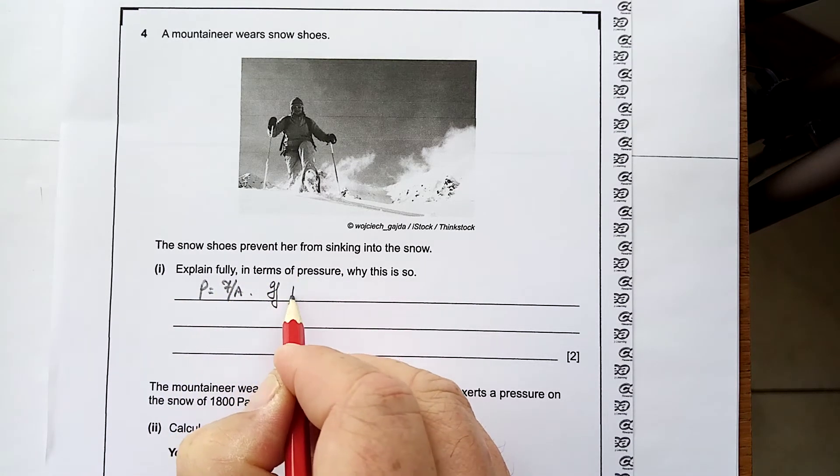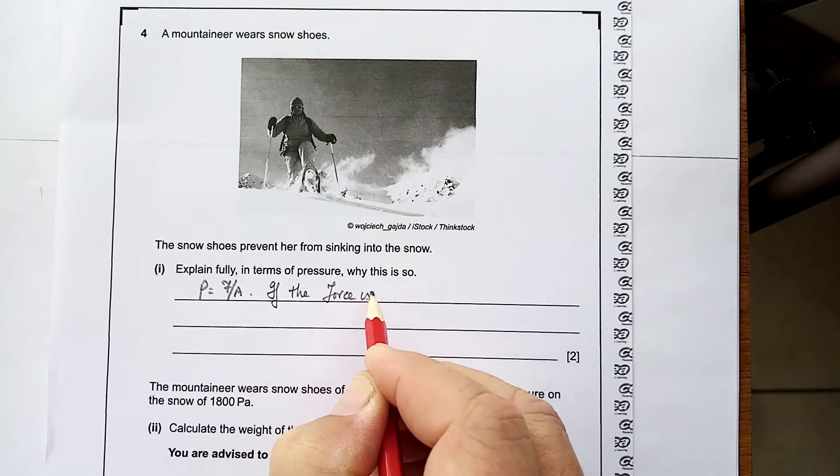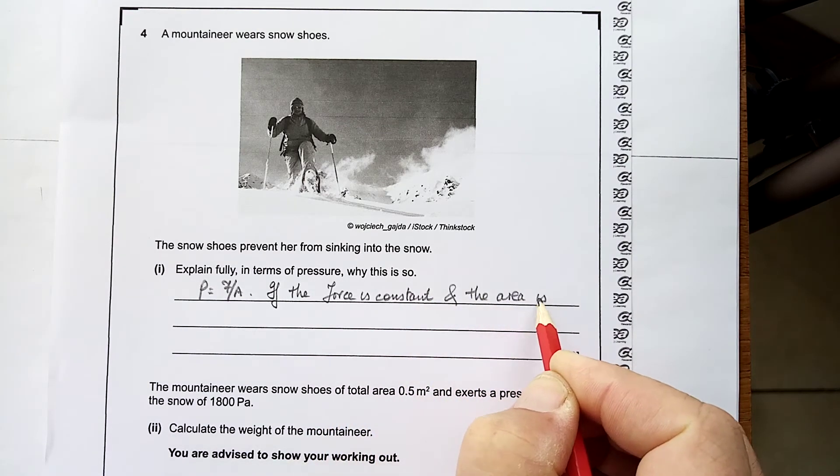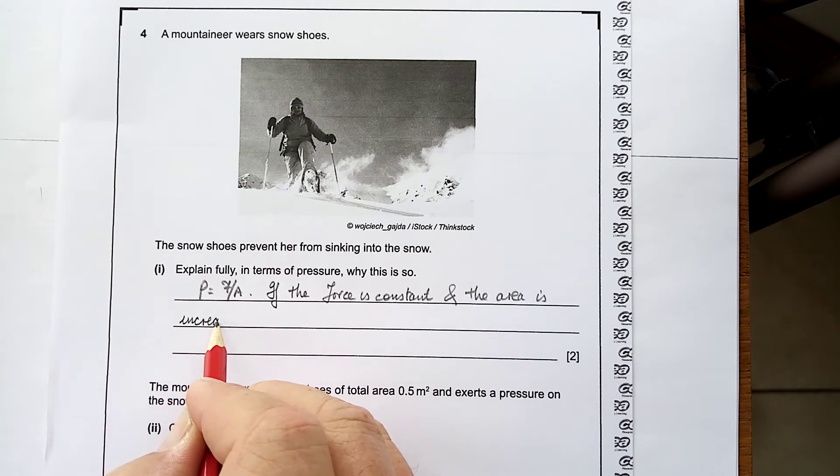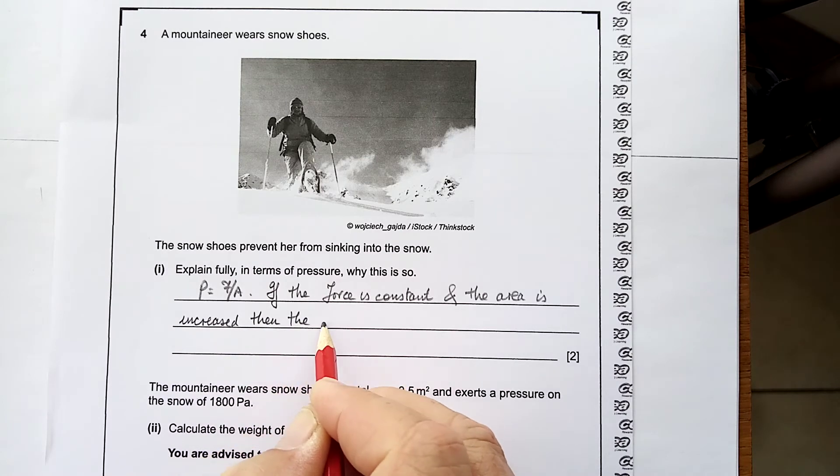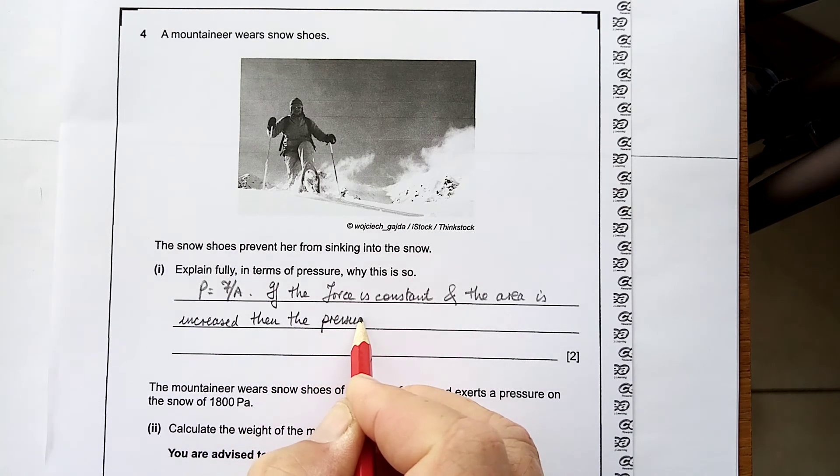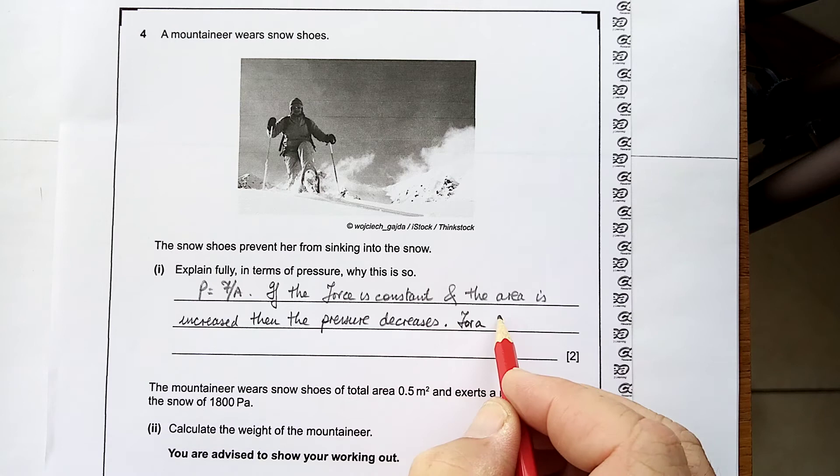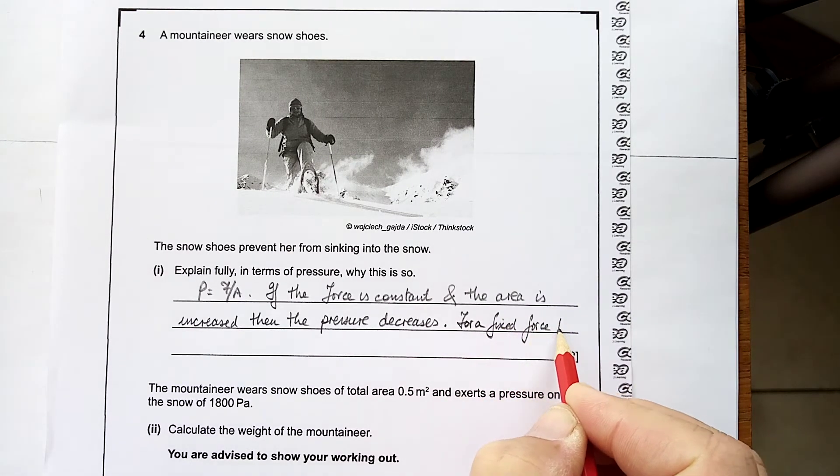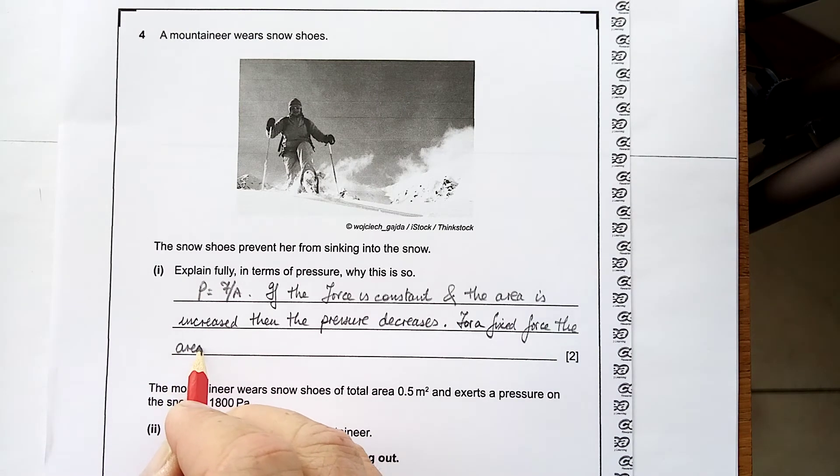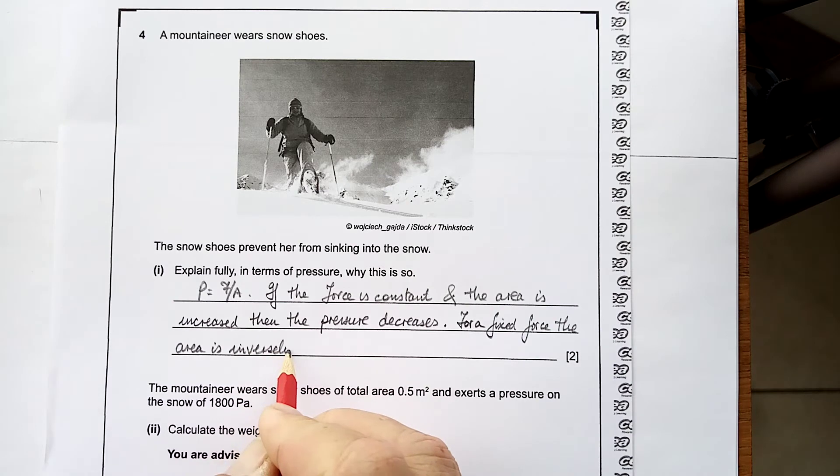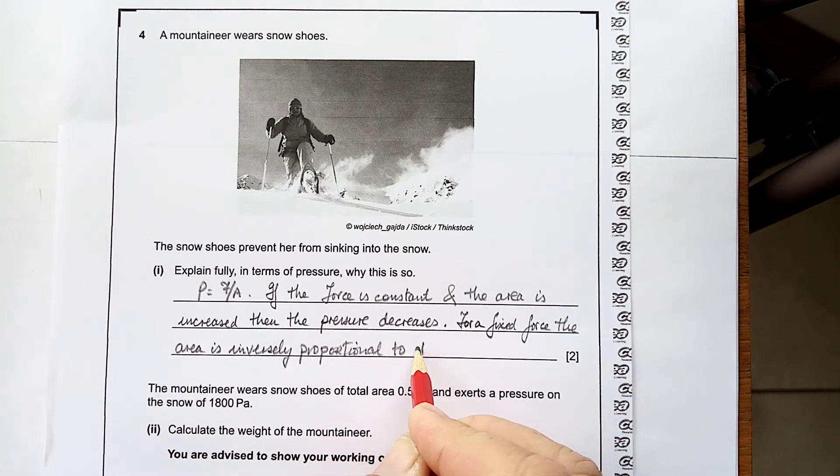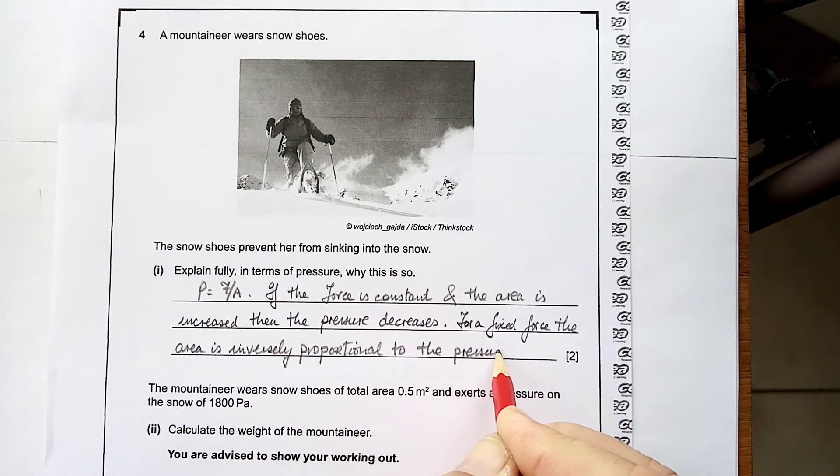P equals F divided by A. If the force is constant, and the area is increased, then the pressure decreases. The area is inversely proportional to the pressure. So, just have a look at that again.